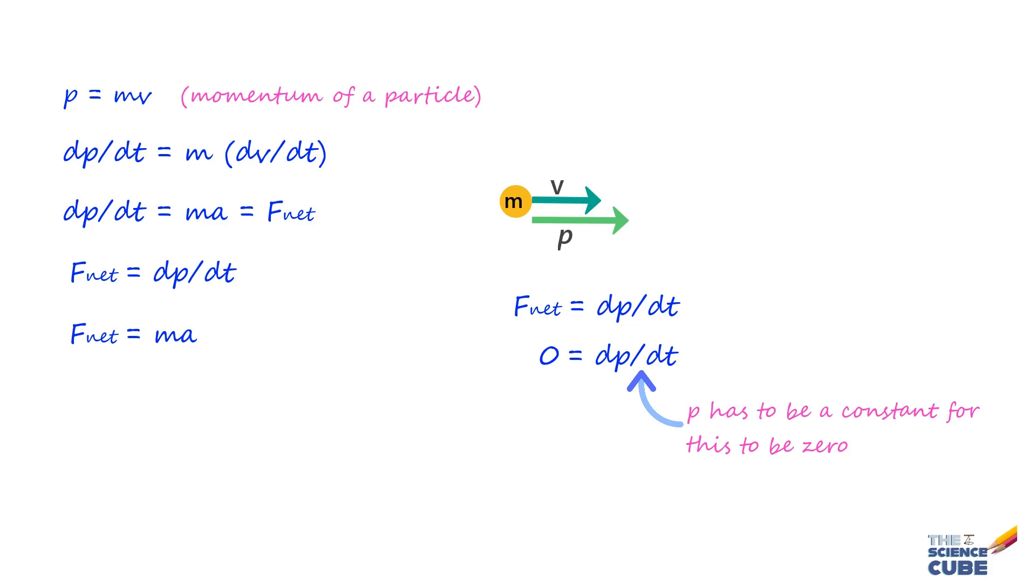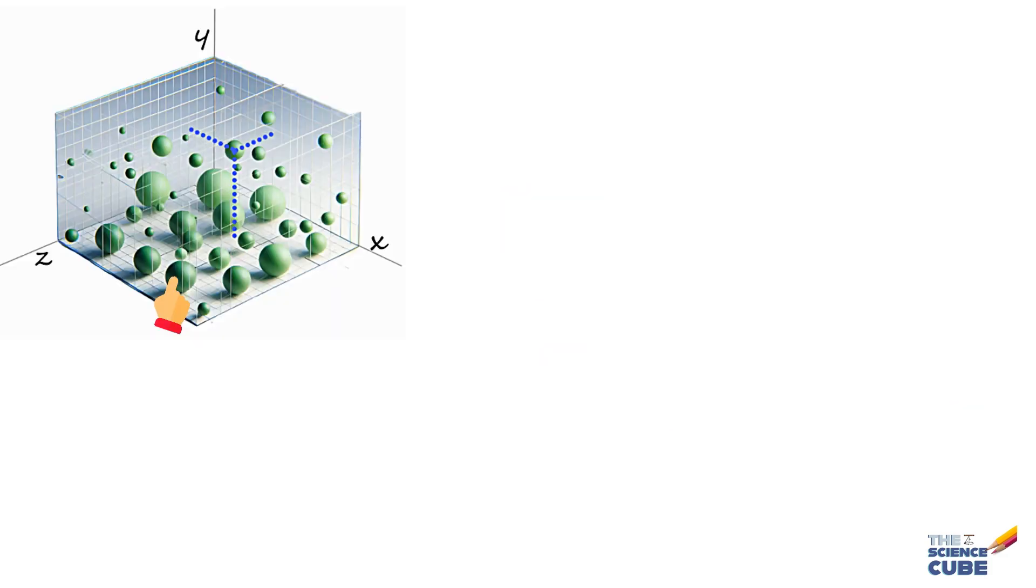Now we can extend the idea of linear momentum to a system of particles. Consider a system of N particles where each one has its own mass, velocity, and therefore linear momentum. We can also assume that the particles can interact with each other and external forces can act on them.